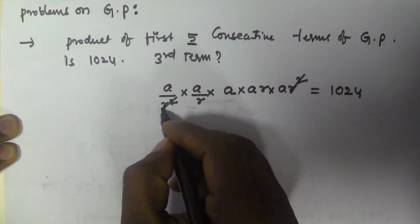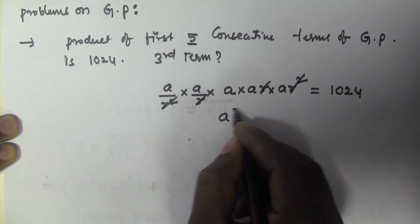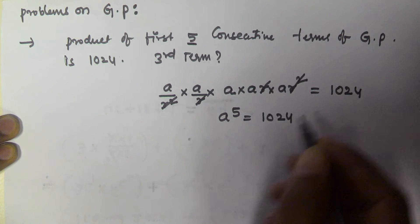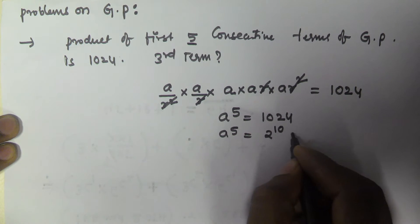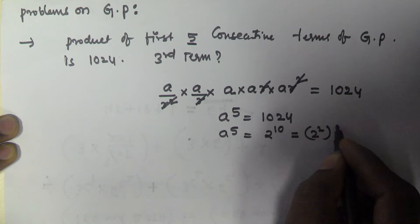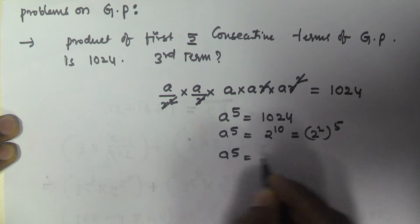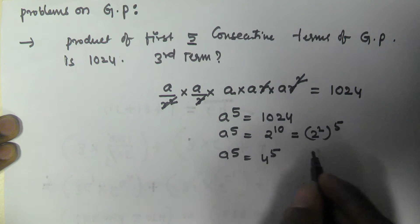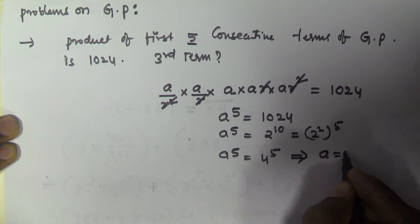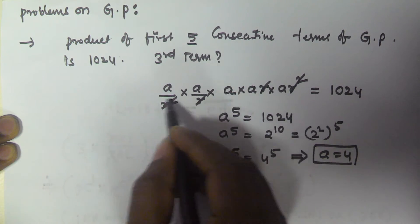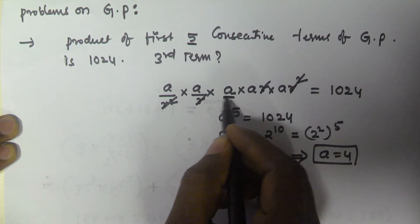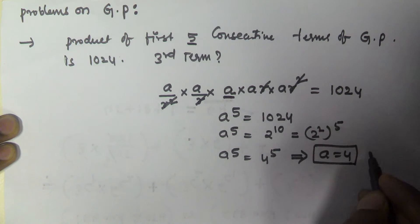Multiplying these, R² and R² cancel, R and R cancel, and we get A to the power of 5 equals 1024. Now 1024 can be written as 2 to the power of 10, which is (2²)⁵ = 4⁵. Since the powers are the same, A equals 4. The third term in this series is A, so the third term is 4.